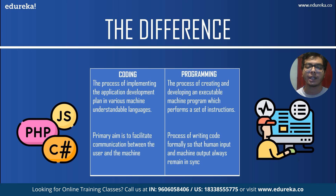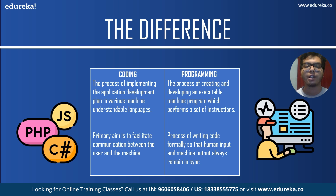Whereas programming is the process of creating and developing an executable machine program which performs a certain set of actions. The entire process of planning, gathering resources, and structuring the entire app is called programming, and coding is just a part of it.